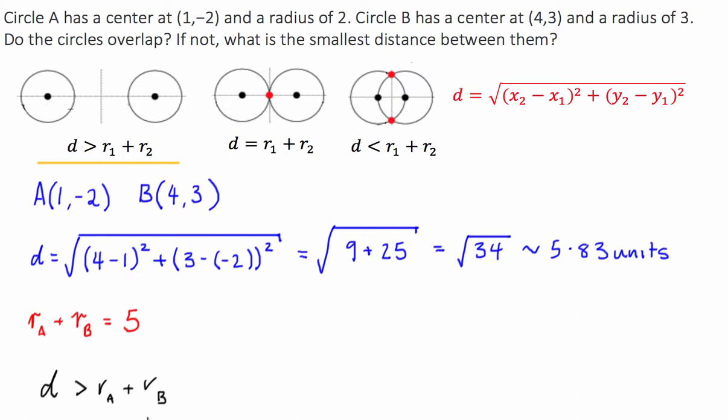So what we find is the difference between the combined radius and the distance is going to be the smallest distance between them, or in the picture, this distance here. So the smallest distance between the two circles is going to be equal to 5.83 subtract 5, or 0.83 units.